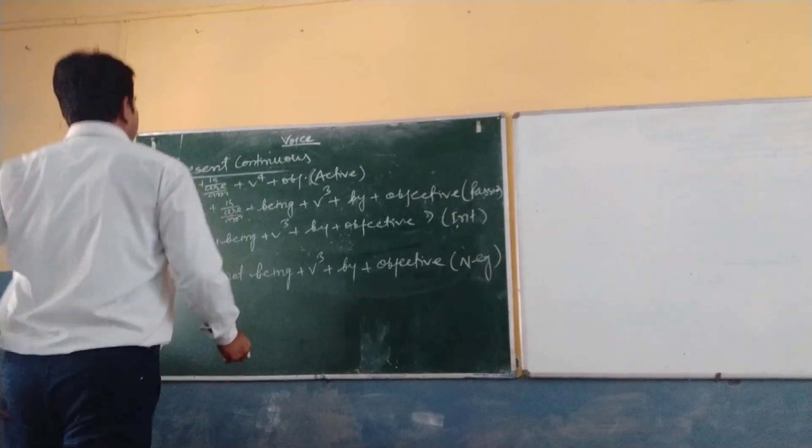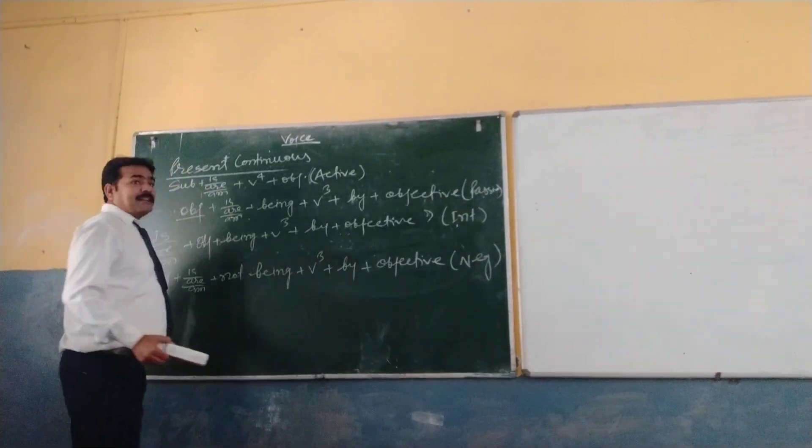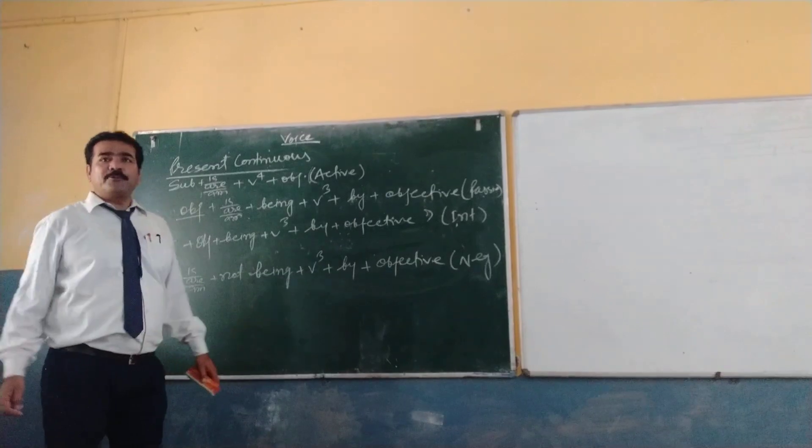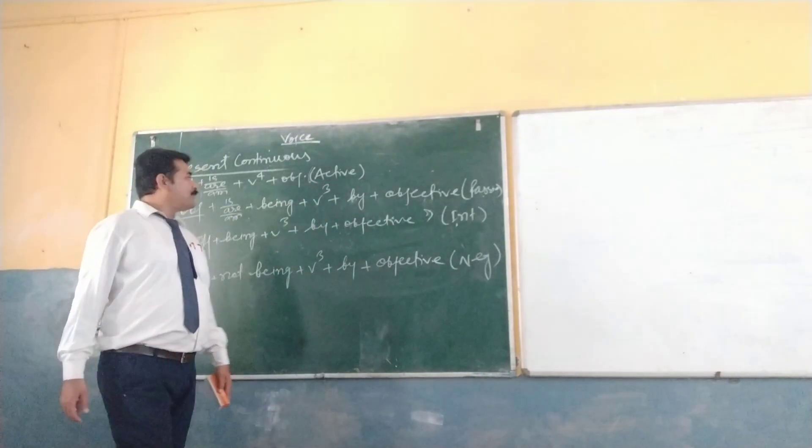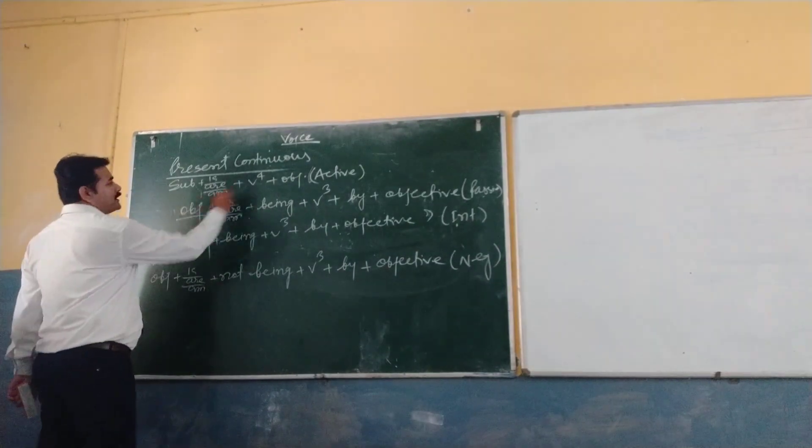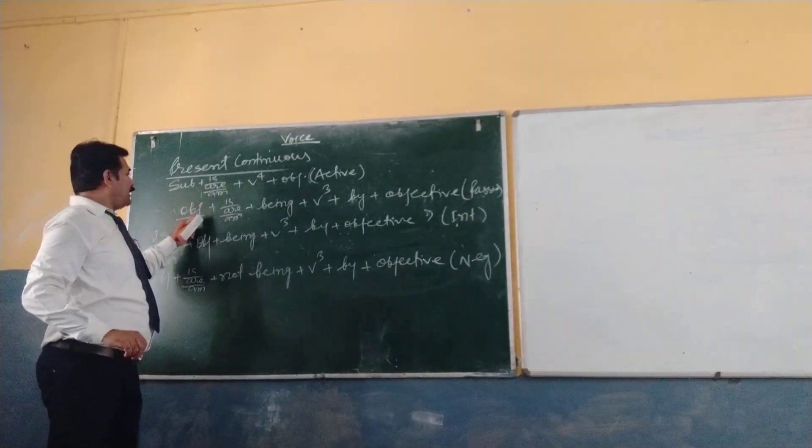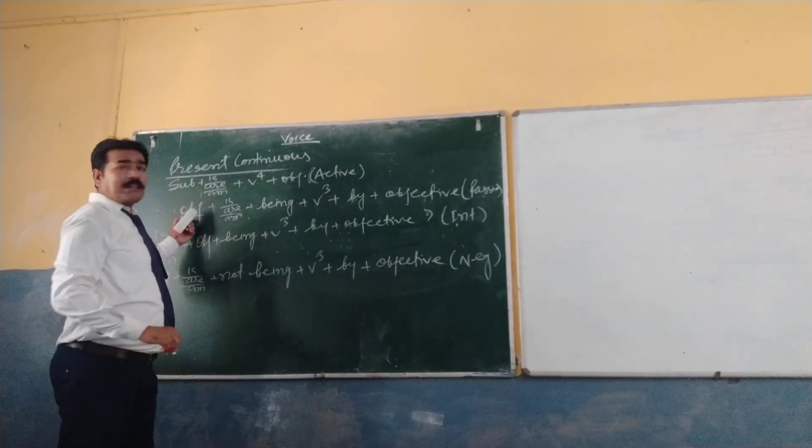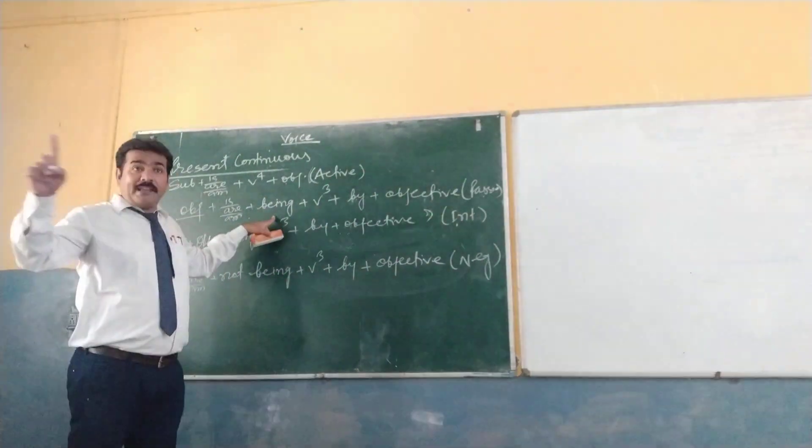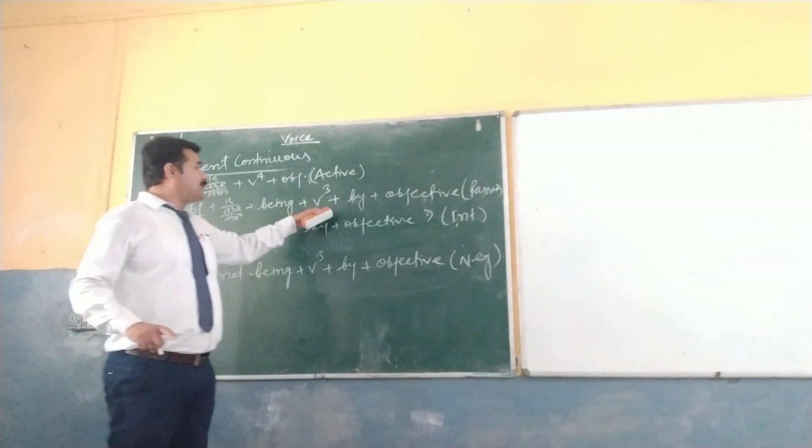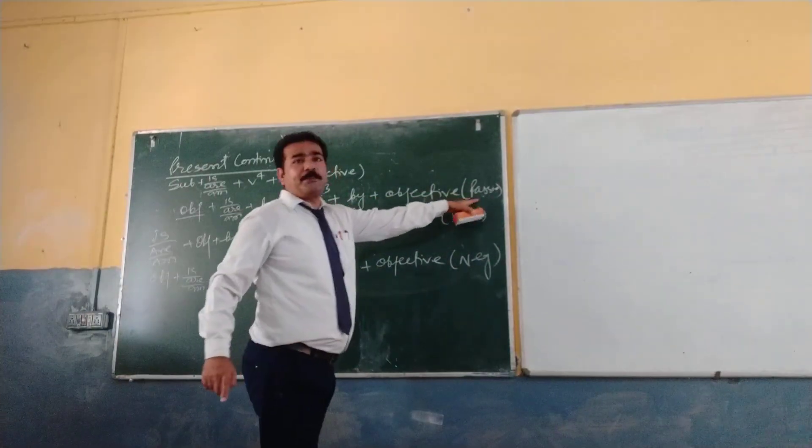Now let's see present continuous. For the present continuous, subject is RM plus V4 plus object. This is called your active statement. And for the passive statement, object will come at the place of subject. And then use being, B-E-I-N-G. Remember, use being.